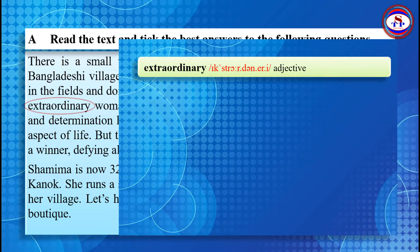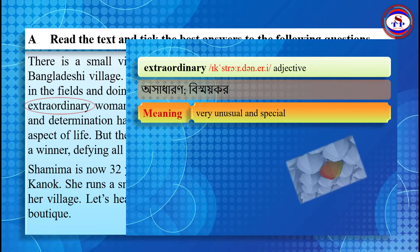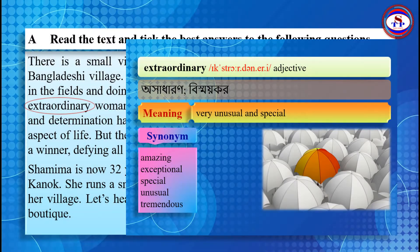The word 'extraordinary' is also used here as an adjective. That means very unusual and special. Here you can see an extraordinary umbrella among the many ordinary umbrellas. The synonyms of extraordinary are: amazing, exceptional, special, unusual, and tremendous.